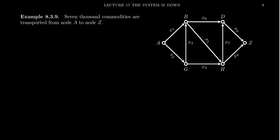So imagine we have this following grid with nodes A, B, D, G, H, Z. Imagine these are names of cities or warehouses or something like that. And so what we have to do is we have to ship 7,000 commodities from site A to site Z.